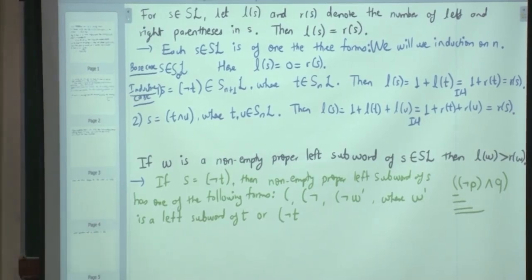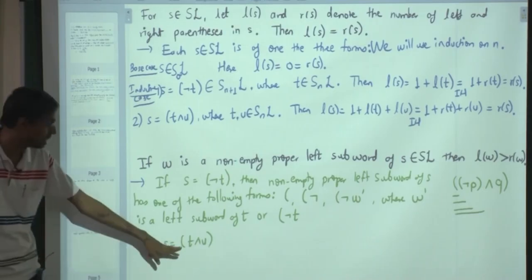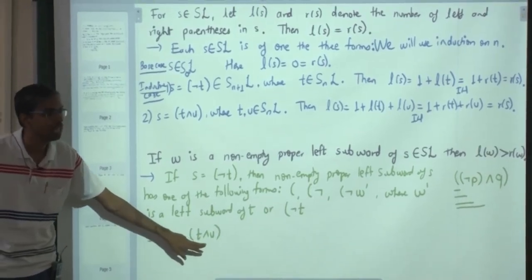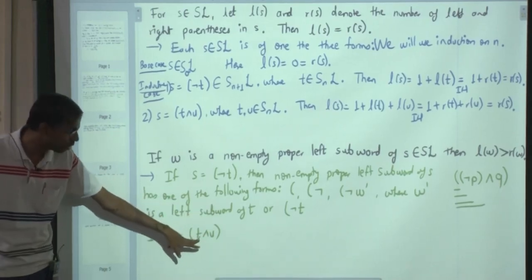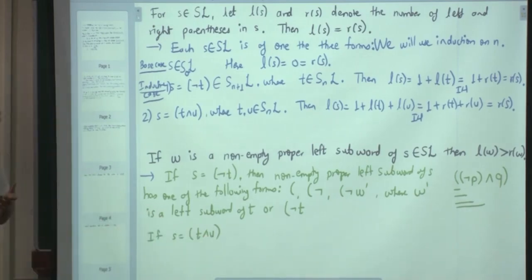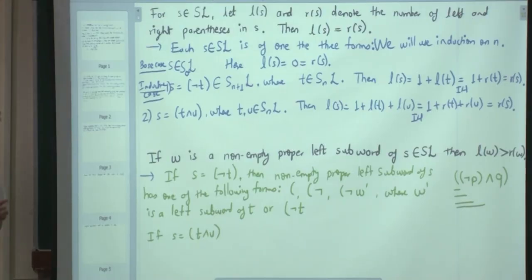Can you do the second part as well? If S equals T conjunction U, the forms of left subwords are: just the open parenthesis, or the open parenthesis followed by a left subword of T (use induction on T), or the entire T plus the conjunction symbol (the open parenthesis is extra), or going into some left subword of U (use induction hypothesis for U). This is again a straightforward proof.